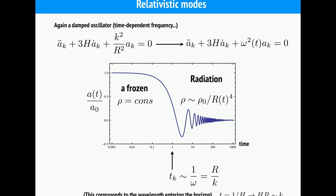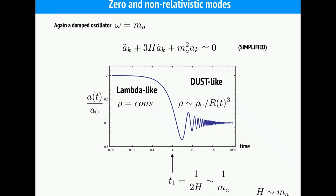For non-relativistic modes with very small momentum — where we can neglect k but not the mass — we again have a damped harmonic oscillator, but now with a fixed frequency set by the mass. The field does nothing at very early times, then when the Hubble time equals the inverse mass it starts to oscillate. The energy density of these non-relativistic oscillating modes redshifts like matter — as one over the scale factor cubed.